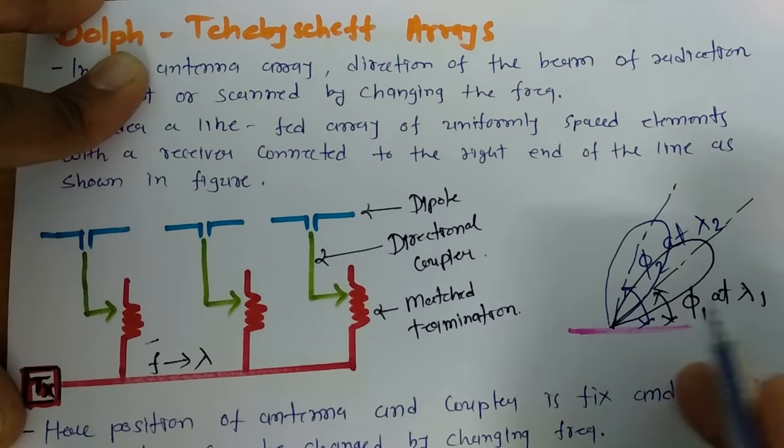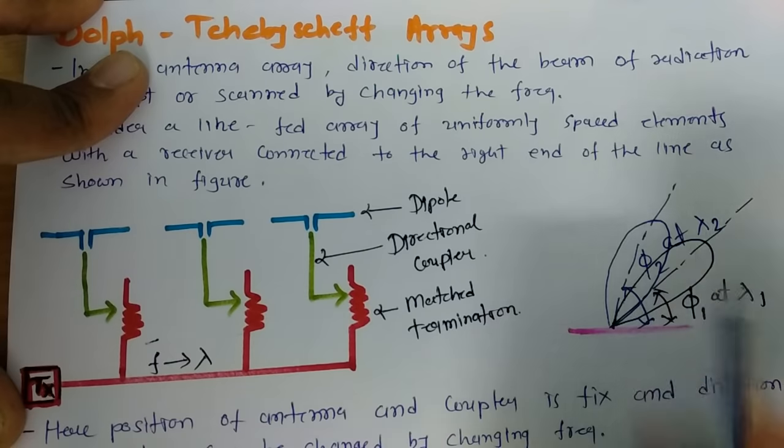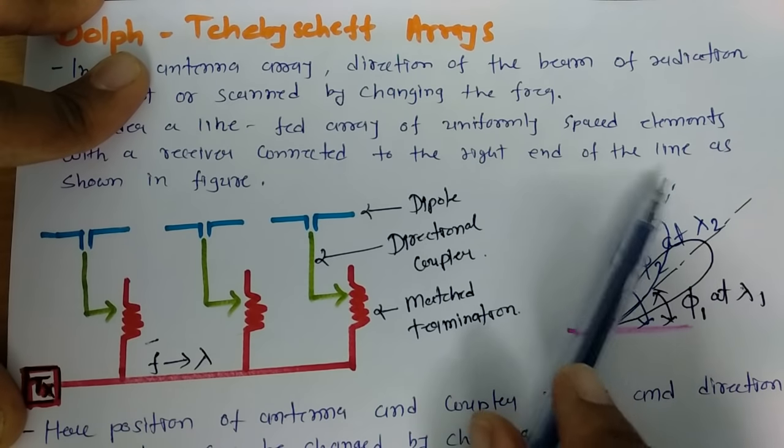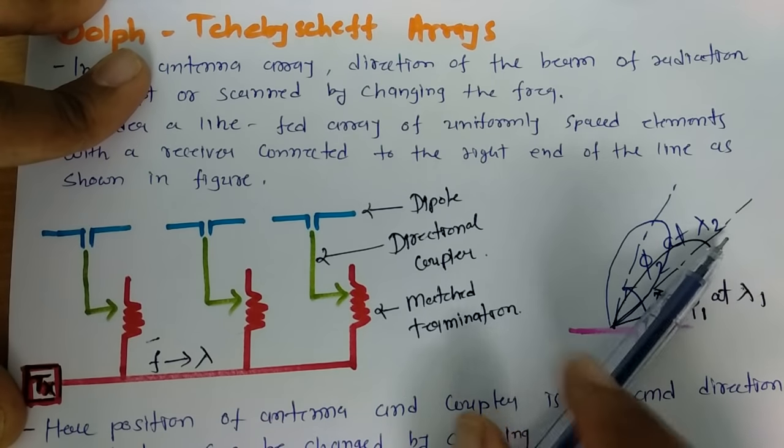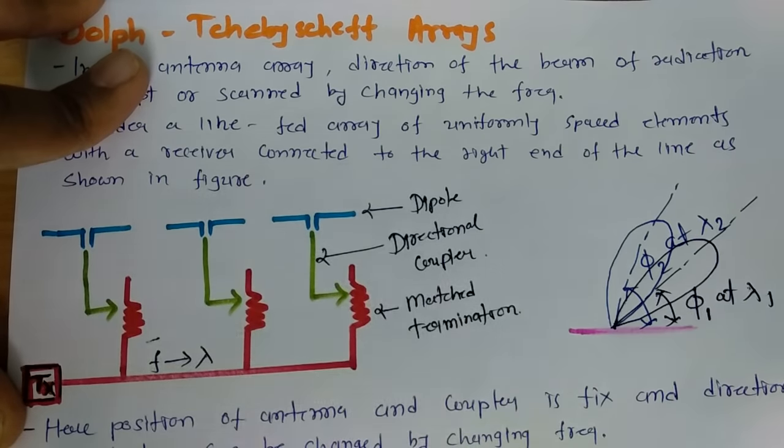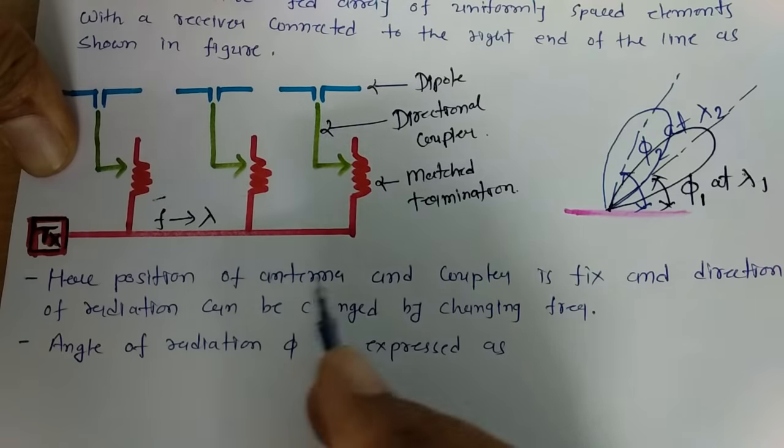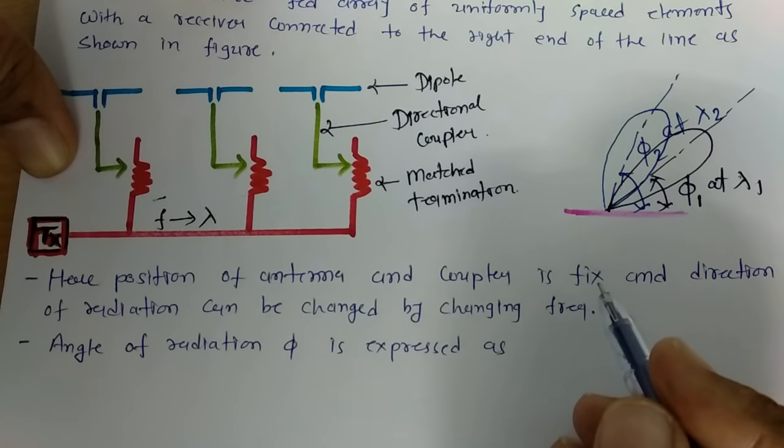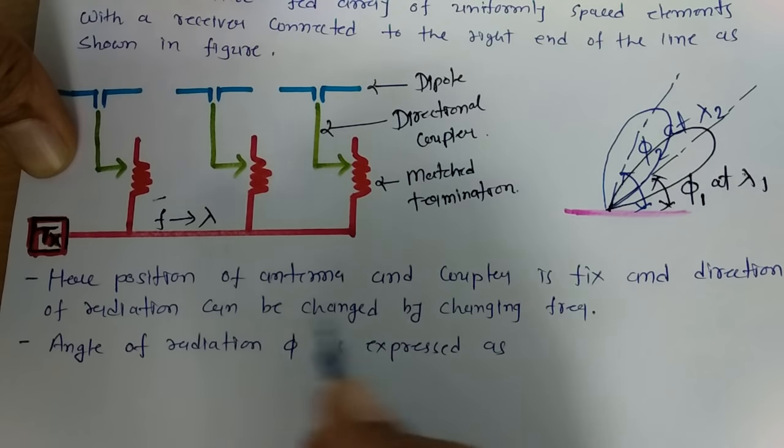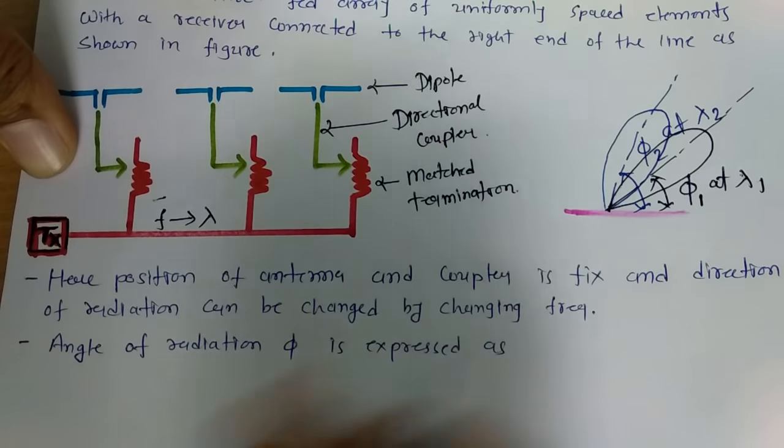By changing wavelength, means by changing frequency, we can change this beam. How to do this? Let us try to understand that. Here, pattern, position of antenna and coupler is fixed. And direction of radiation can be changed by changing frequency.